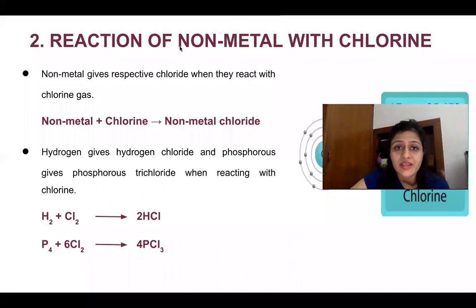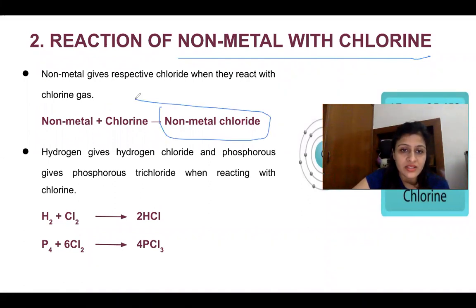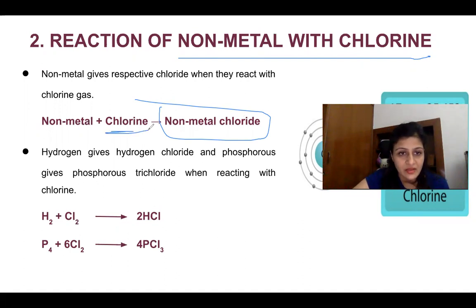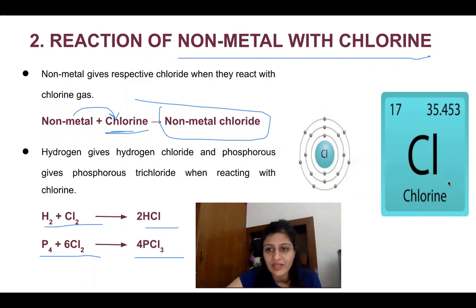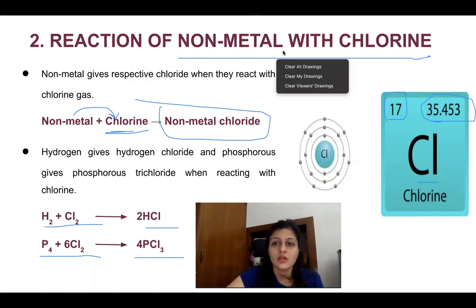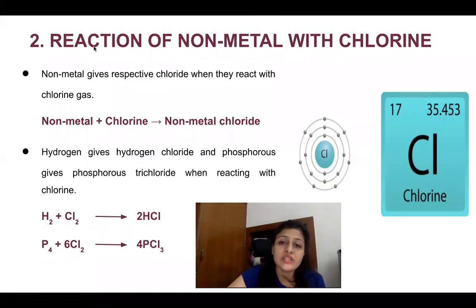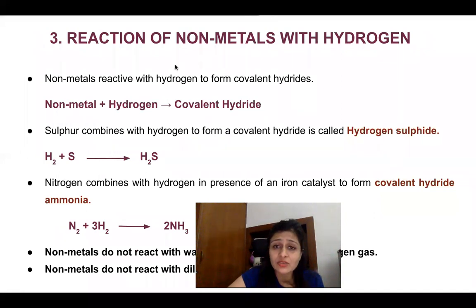Now we have come to the second type of reaction. We first talked about non-metals with oxygen. Now let's talk about non-metals with chlorine. When non-metals react with chlorine, they form chlorides. When hydrogen reacts with chlorine, it forms hydrochloric acid. When phosphorus reacts with chlorine, it forms phosphorus trichloride. Now let's talk about non-metals with hydrogen.